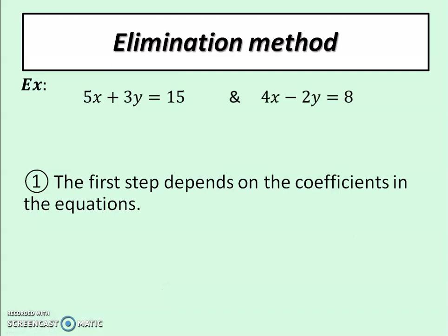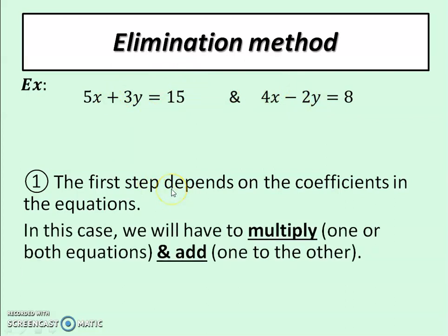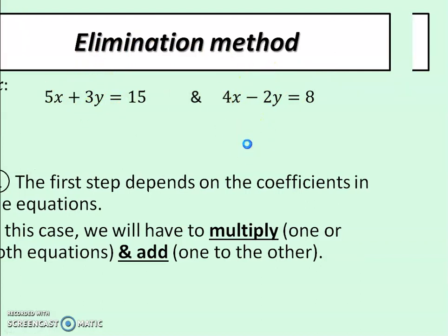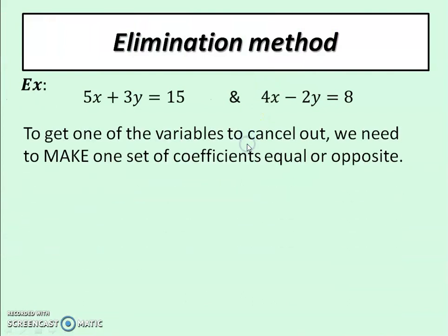Next, what we have to do is take a look at the coefficients and see if there's an easy way to multiply one or both equations by something to get one of the variables to cancel out. By cancel out we mean that you have to have opposite coefficients. Like for instance, here a 3y, this one would have to be negative 3y, or you could have a 10x and a negative 10x.